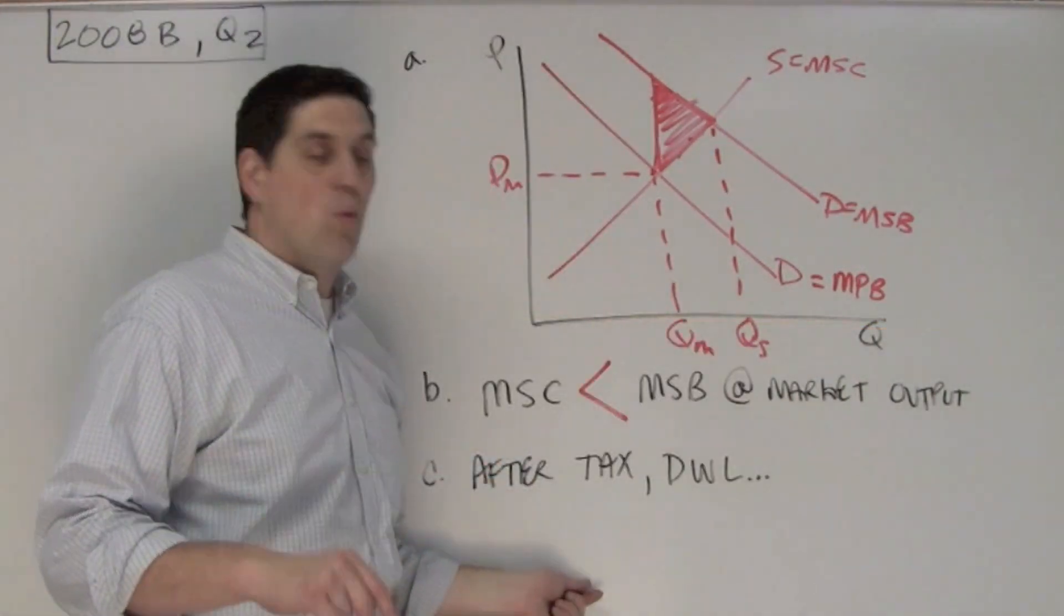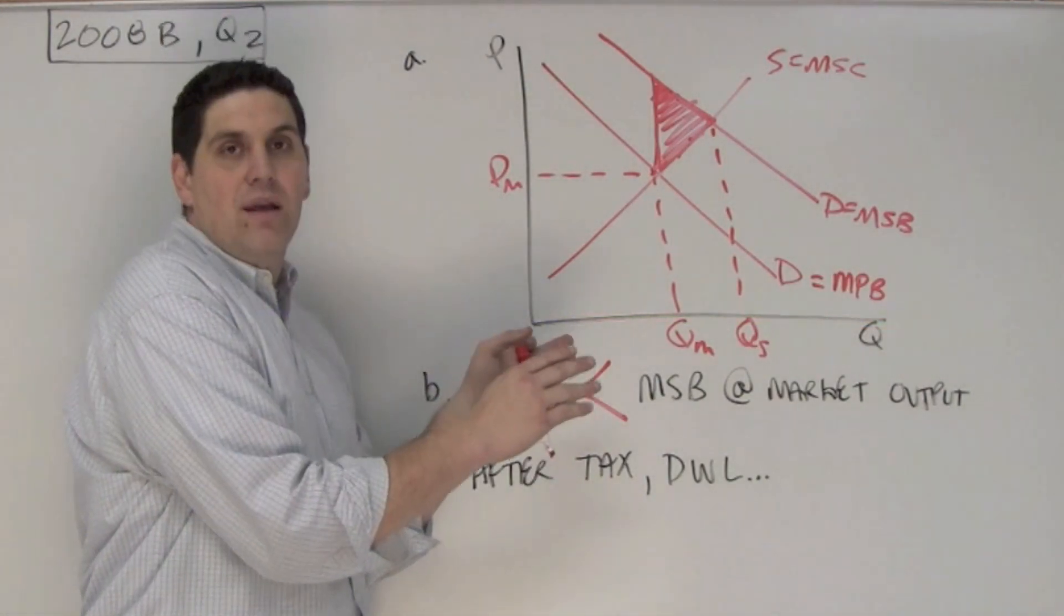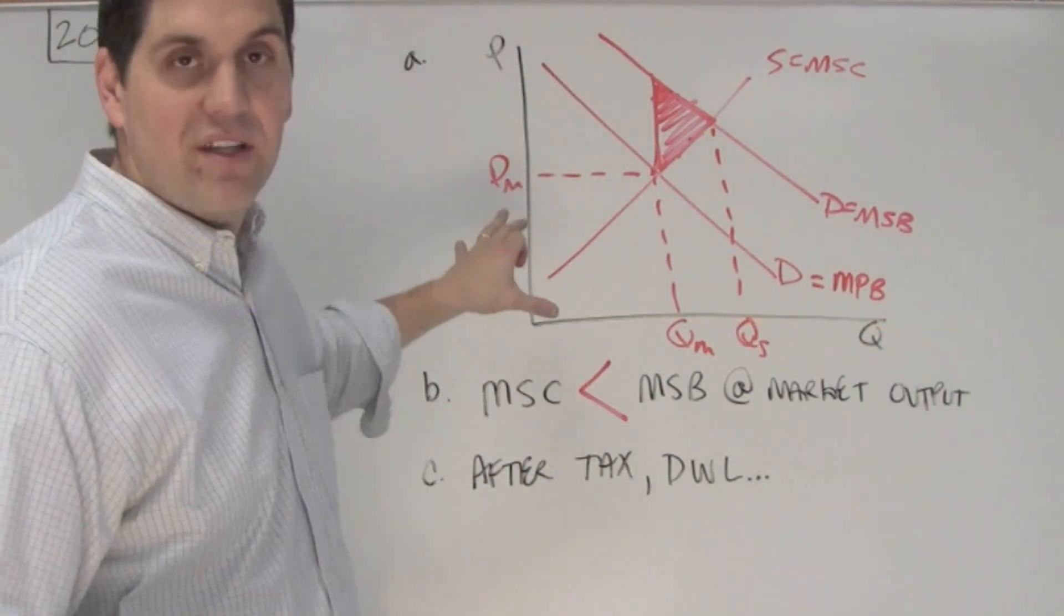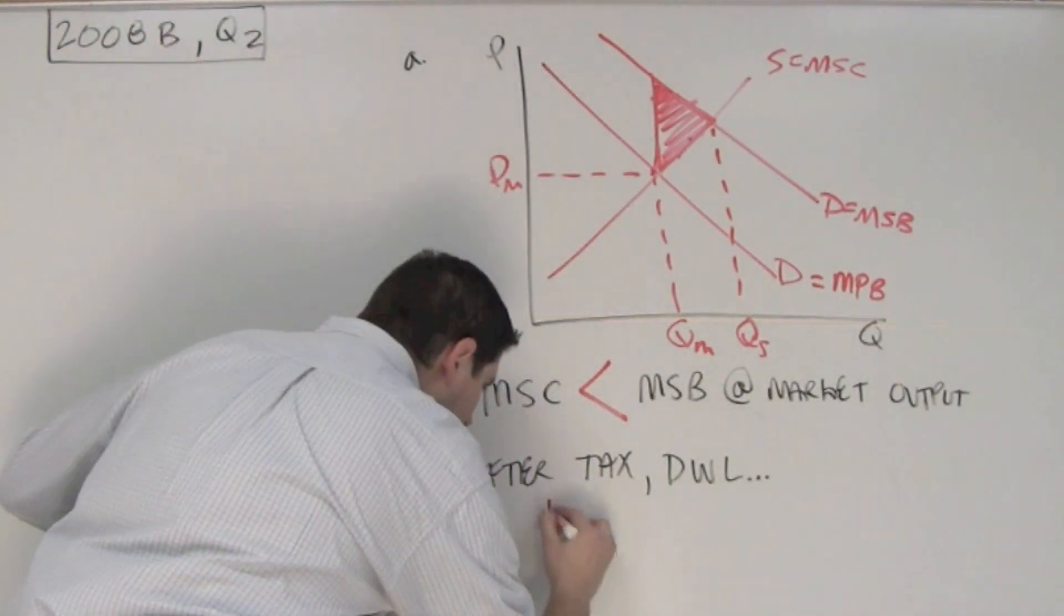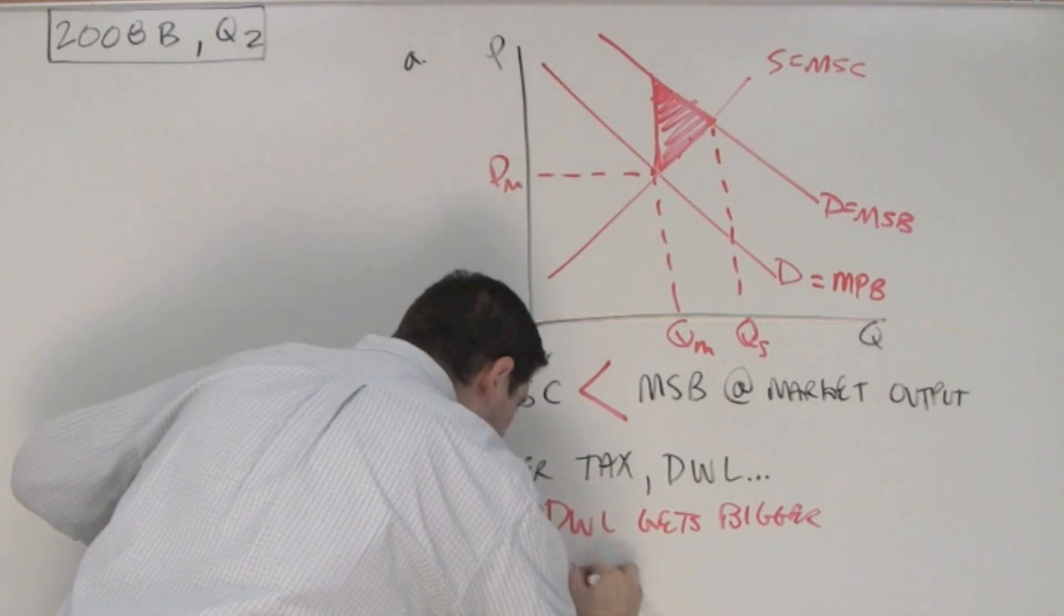The last part asks you, if there is a tax, what happens to deadweight loss? The government comes in and taxes this market. Now you know they shouldn't because this is a positive externality, but if they did, what's going to happen to deadweight loss? Deadweight loss gets bigger.